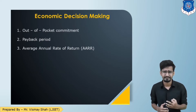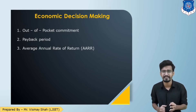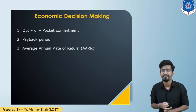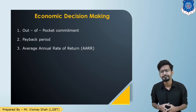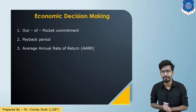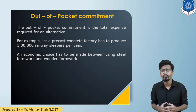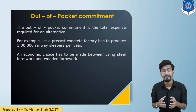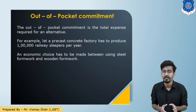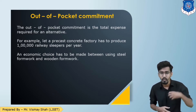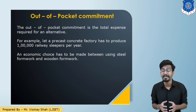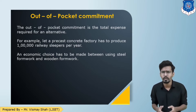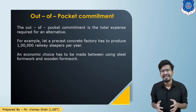There are three methods: out of pocket commitment, payback period, and average annual rate of return. The out of pocket commitment method is based on total expenses incurred when you select a particular alternative — what amount of expense happens to perform a particular alternative.